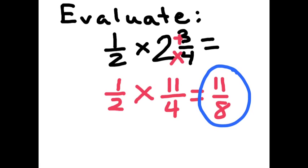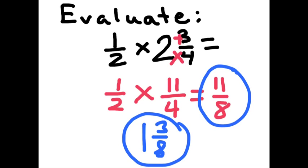How many 8's go into 11? There are 1 whole 8 in 11 with 3 left over, and the denominator stays the same. So 1 half times 2 and 3 fourths, the answer is 1 and 3 eighths.